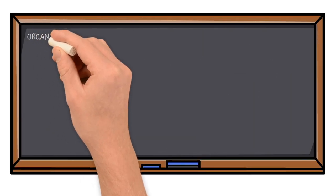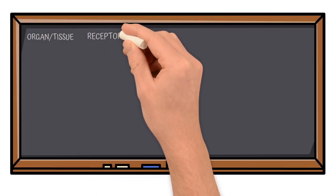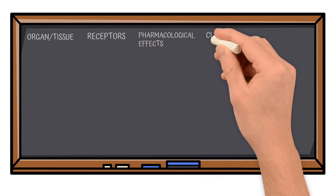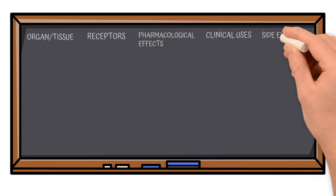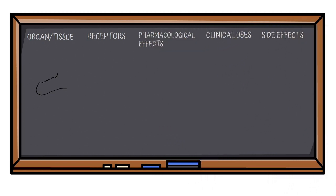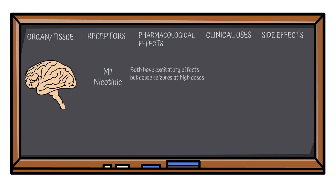Parasympathomimetic drugs: effects and uses. We will see which organ is present, what are the pharmacological effects and what are the clinical uses and the adverse effects. Talking about the brain, M1 receptor and nicotinic receptors are present in brain, both of which are responsible for excitation of CNS.